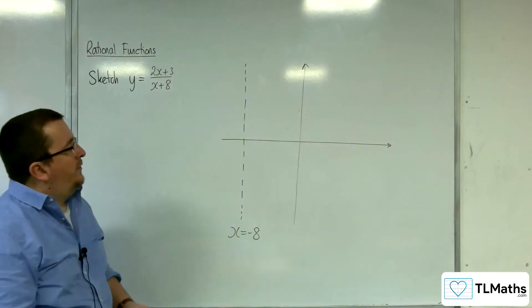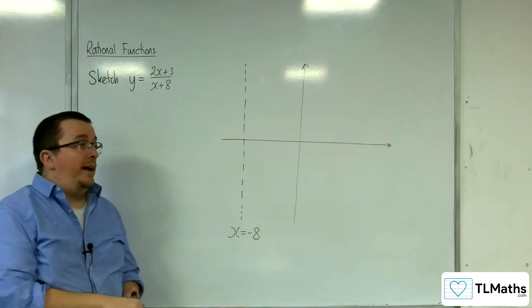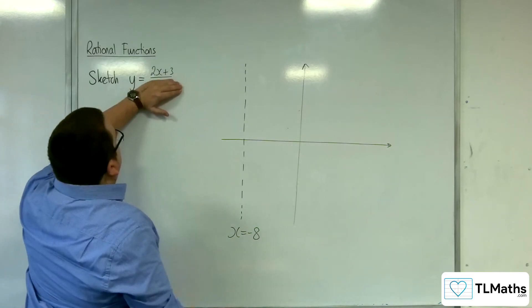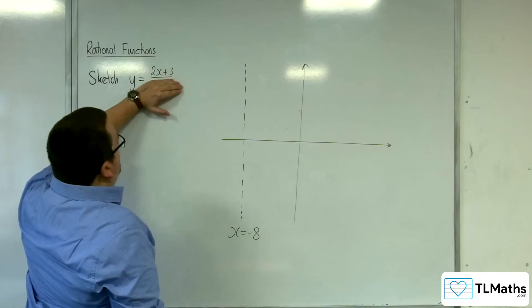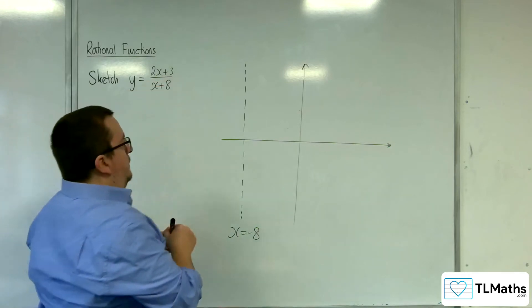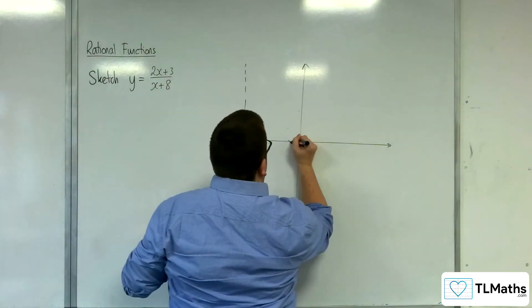Next thing, where it crosses the coordinate axes, so let's go for where it crosses the x-axis first. That's when y is 0, and so we're going to need the numerator to be 0, so that would be at minus 3 halves. So 2x plus 3 equals 0 when x is minus 3 halves, which is about there.